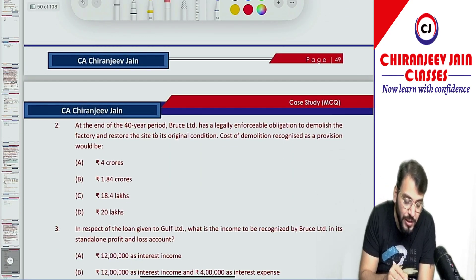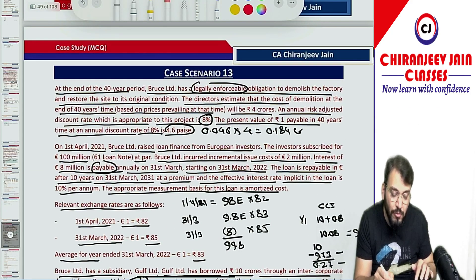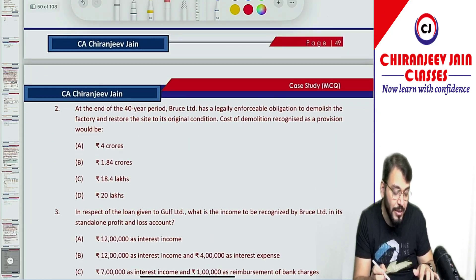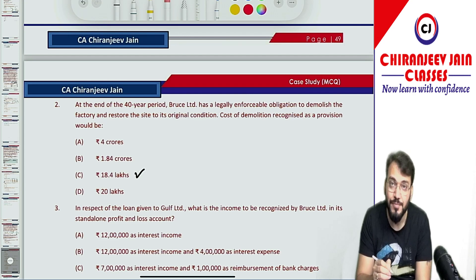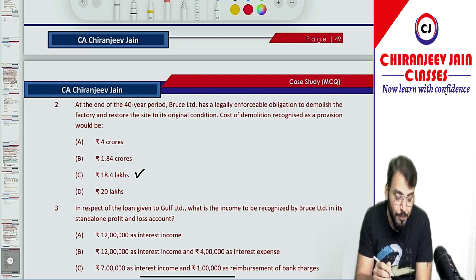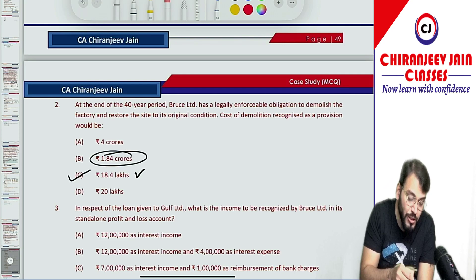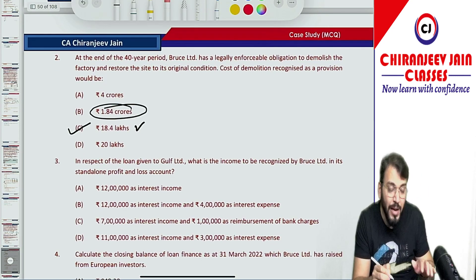Coming to MCQ point number 2: At the end of the 40-year period, Bruce Ltd has a legally enforceable obligation to demolish the factory. The cost of demolition recognized as a provision — we already calculated this — is 0.184 crore. Converting into lakhs, that is 18.4 lakhs. So option number C is correct. Convert crore to lakhs to get 18.4 lakhs.